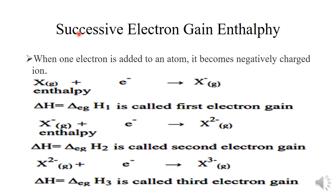Next is successive electron gain enthalpy. When one electron is added to an atom, it becomes a negatively charged ion, and the enthalpy of this first step is known as the first electron gain enthalpy. As in most cases energy is released, the first electron gain enthalpy is negative in magnitude.